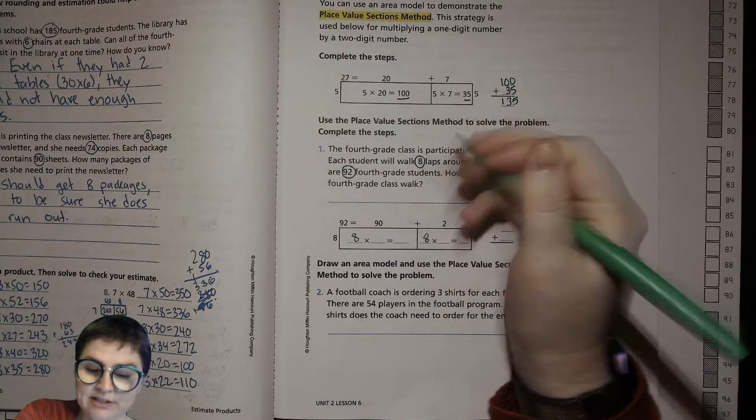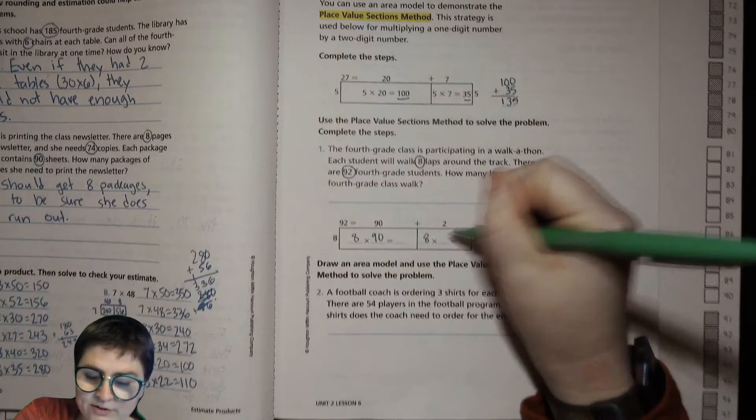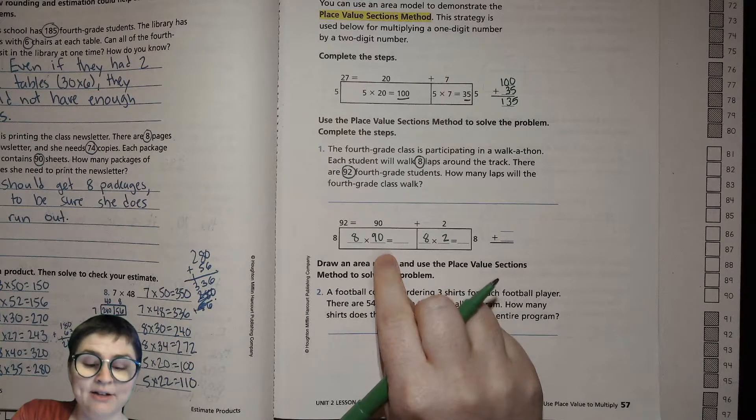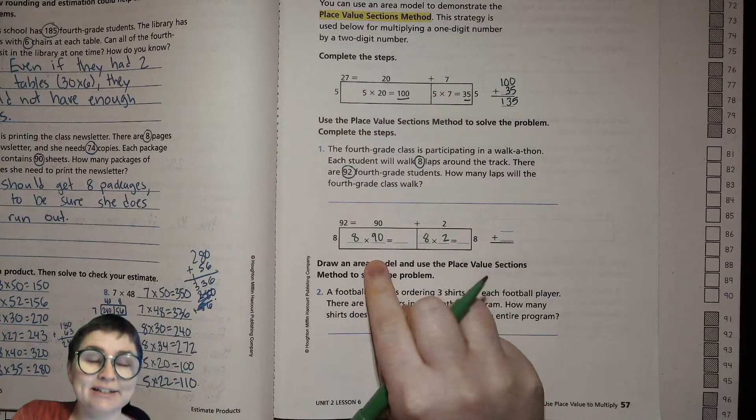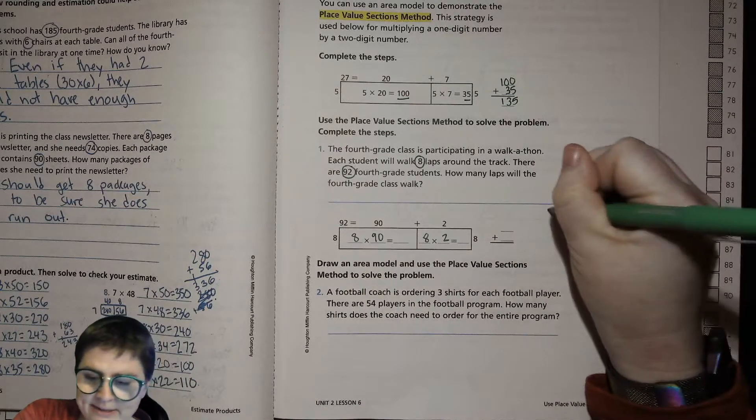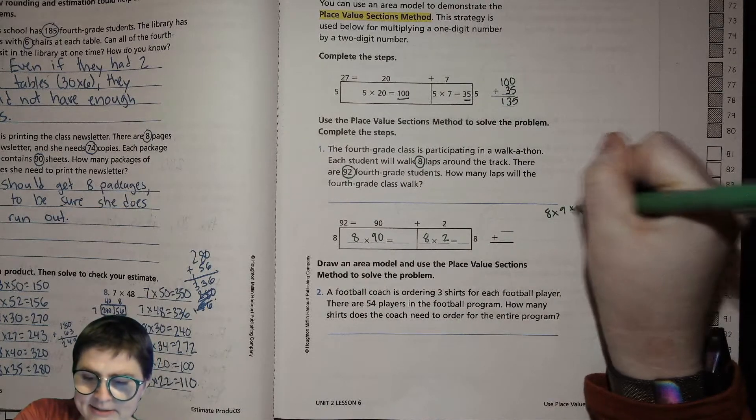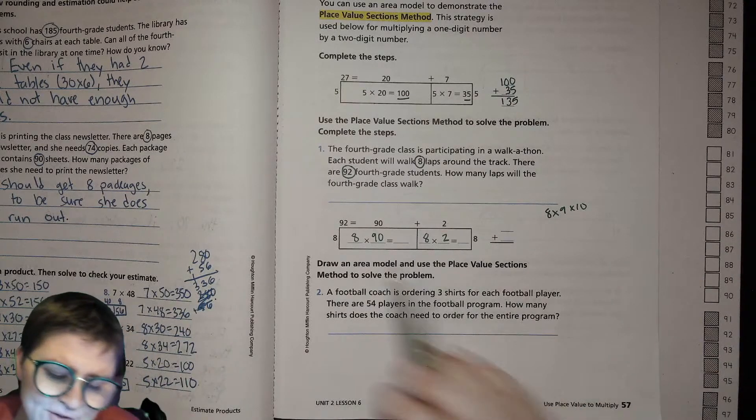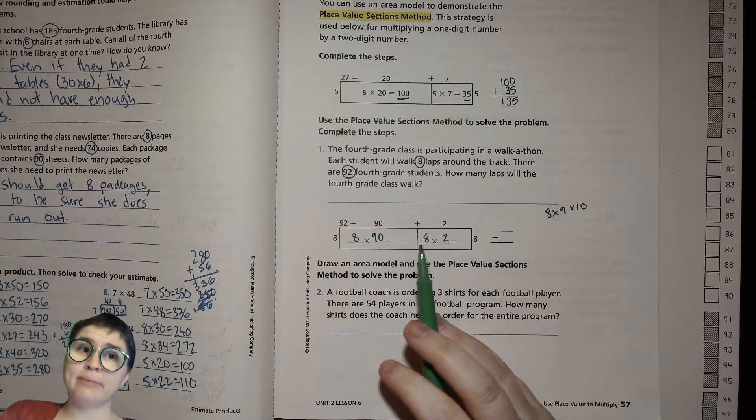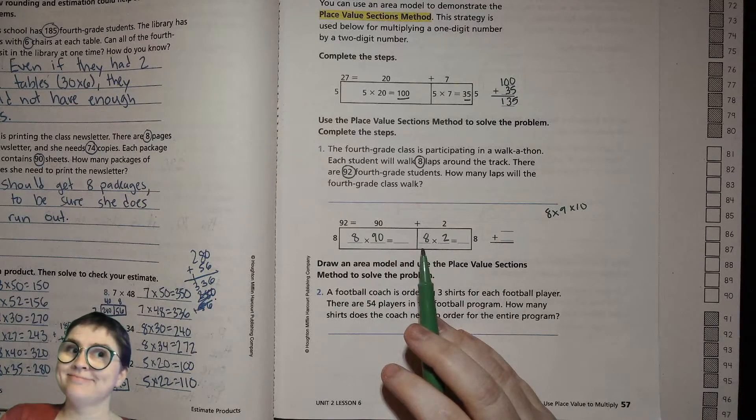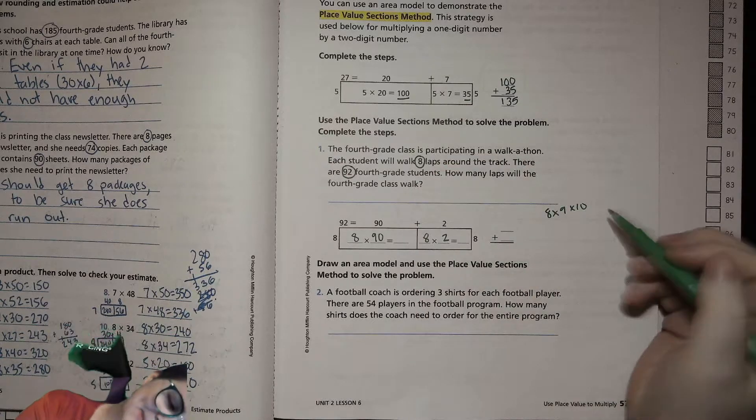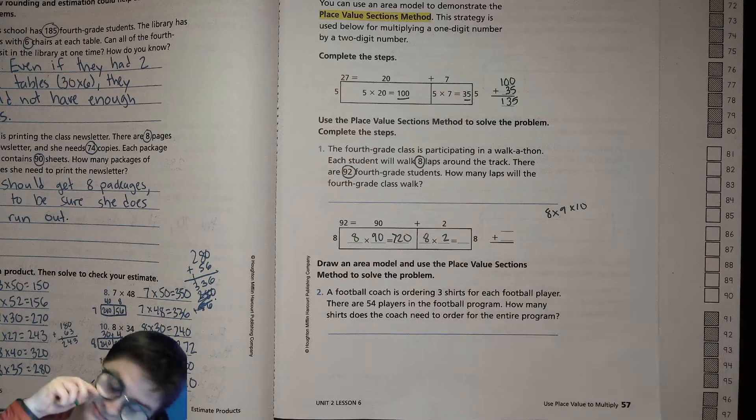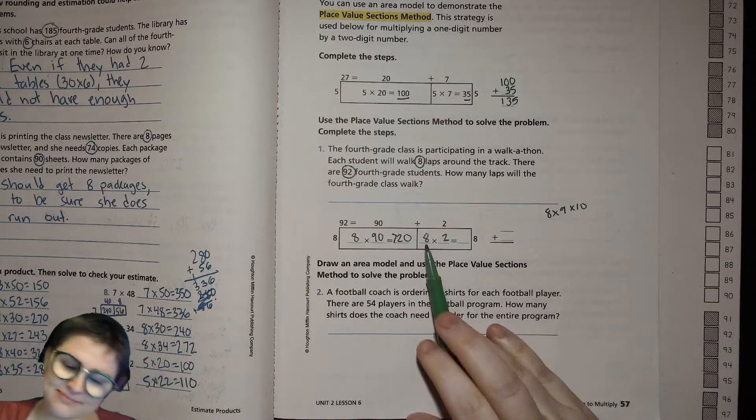Now we're going to have our single digit factor multiplied by both of them. Now you can see why we spent so much time talking about multiplying by 10. 8 times 90? Well, that's 8 times 9 times 10, right? So from there you can do 8 times 9, which is 72, and then times that by 10, so 72 tens is 720. Then 8 times 2 is 16.